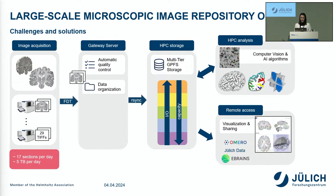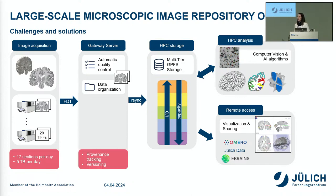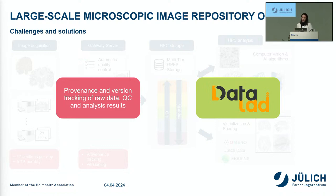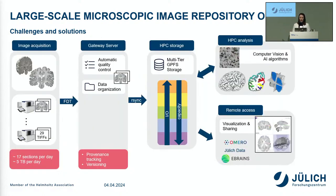When we move our data, it first goes to a gateway server where we do automatic quality control to check if the scan quality is good enough. If not, it will be rescanned. We also organize our data into folders so that we have the 29 TIFF files in one folder per brain section. We want to track the software used for automatic quality control and version our data, because a rescan constitutes a new version of the file. To track provenance and versions for such big data, we use DataLad — we set up one DataLad dataset per section and track everything with that.